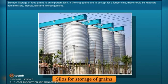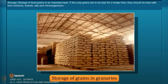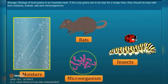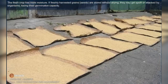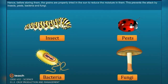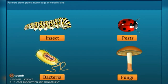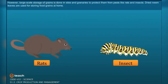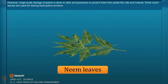Storage. Storage of food grains is an important task. If crop grains are to be kept for a longer time, they should be safe from moisture, insects, rats, and microorganisms. The fresh crop has more moisture, so if freshly harvested grain seeds are stored without drying, they may get spoiled or lose their germination capacity. Hence, before storing, the grains are properly dried in the sun to reduce moisture, which prevents attack by insects, pests, bacteria, and fungi. Farmers store grain in jute bags or metallic bins. Large-scale storage is done in silos and granaries to protect from pests. Dried neem leaves are used for storing food grains at home.